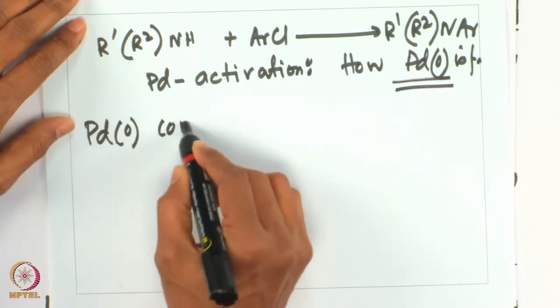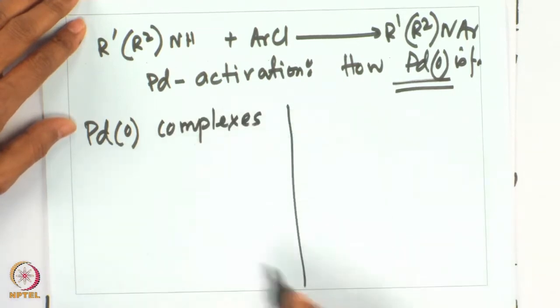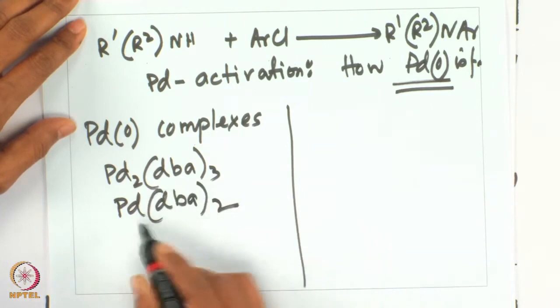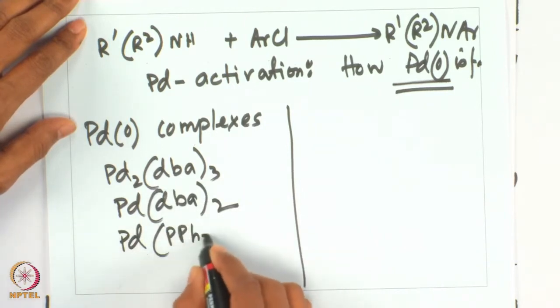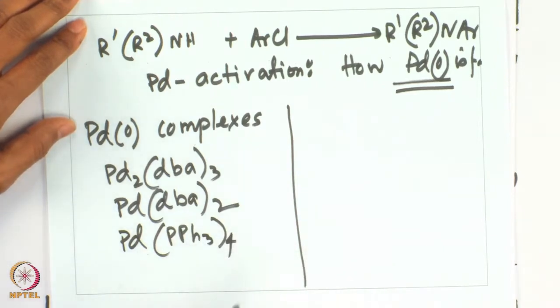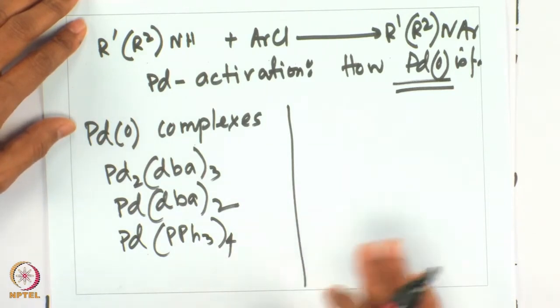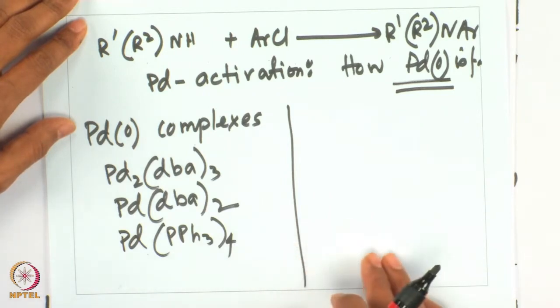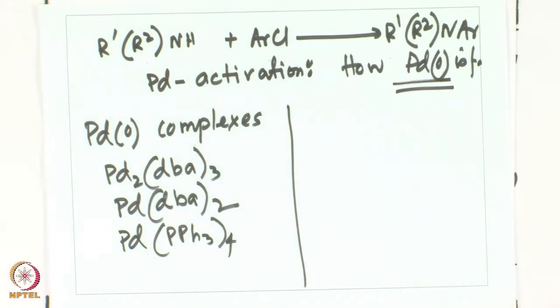One can use palladium(0) complexes as the active species. For example, we can have Pd2(dba)3, Pd(dba)2 - these are commercially available palladium(0) sources - or Pd(PPh3)4, palladium tetrakis. However, the problem is that palladium(0) complexes are more active but considerably less stable. Additionally, the residual ligands, for example dba or triphenylphosphine, can bind to palladium(0) and inhibit its reactivity.